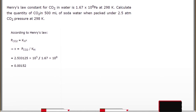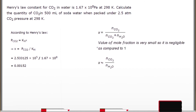Applying Henry's Law to this problem: pCO₂ = kH × χ, where χ is the mole fraction of CO₂. Therefore, χ = pCO₂ / kH = (2.53 × 10⁵) / (1.67 × 10⁸) = 0.00152. The mole fraction χ = NCO₂ / (NCO₂ + NH₂O), where N represents number of moles.